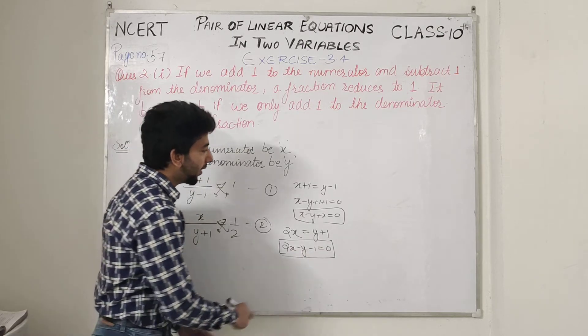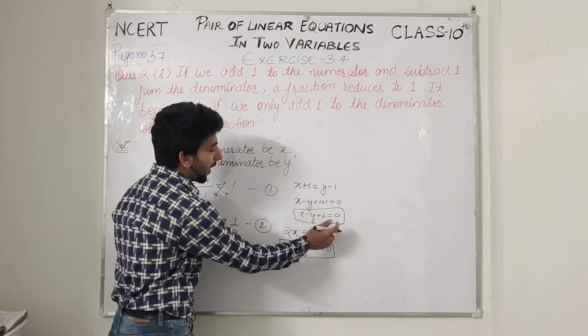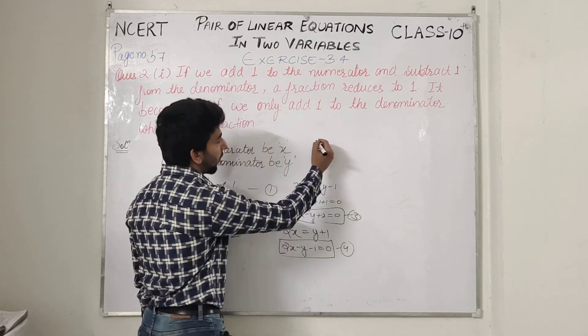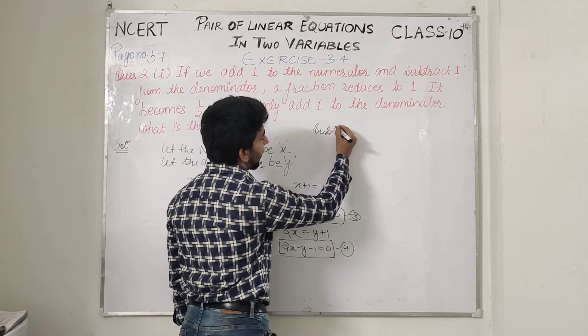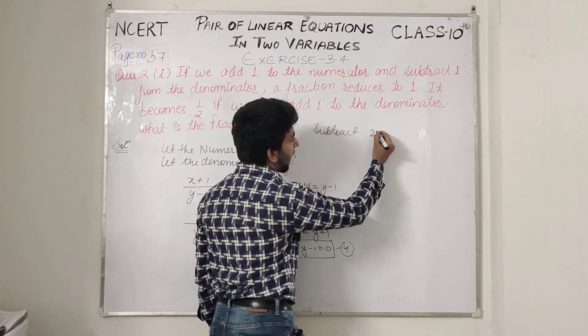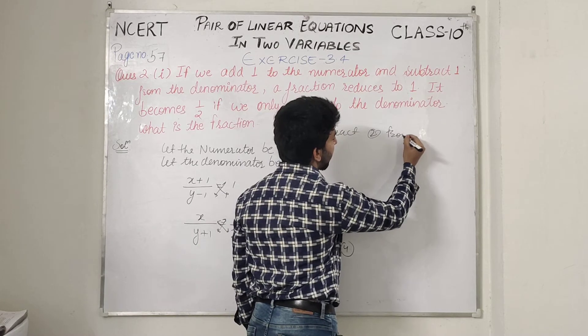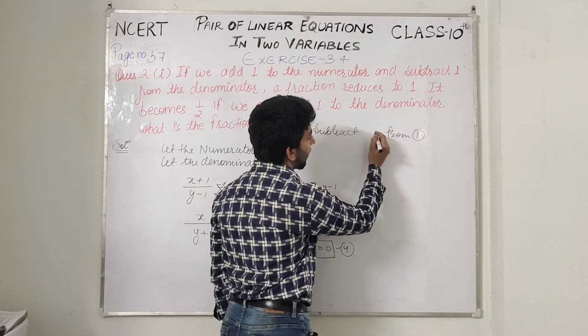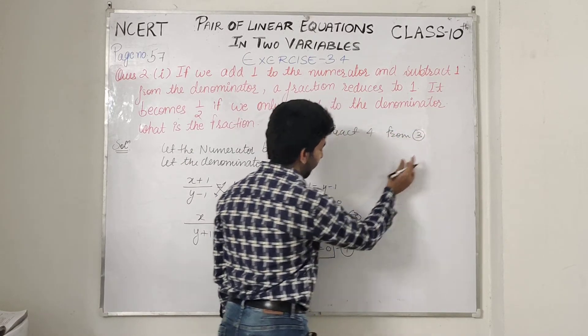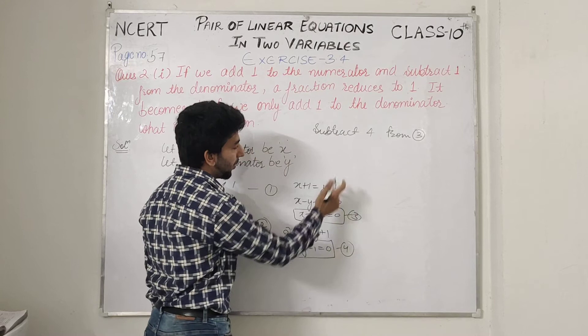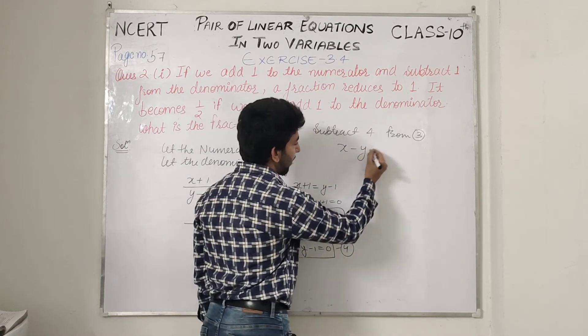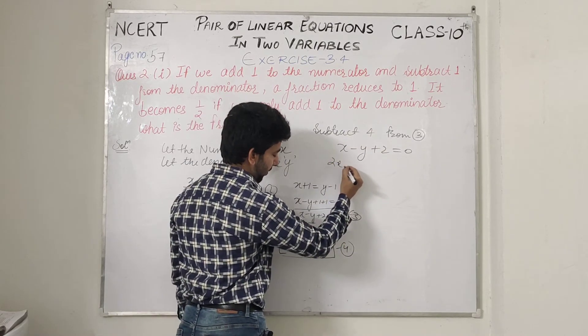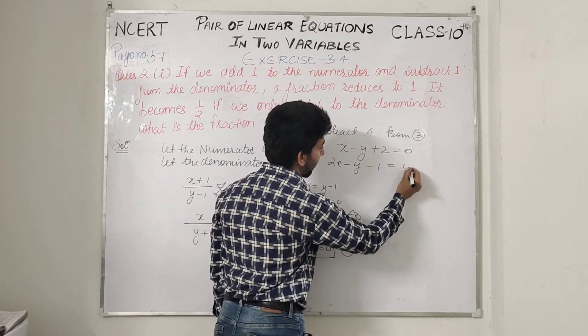We will eliminate. How do we get the third equation? Subtract second from first equation. We have third equation x minus y plus 2 equals 0 and fourth equation 2x minus y minus 1 equals 0. Subtract.